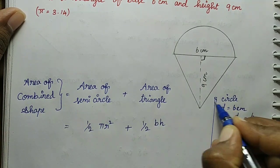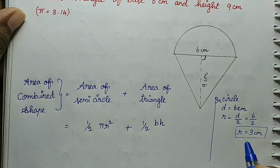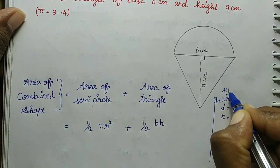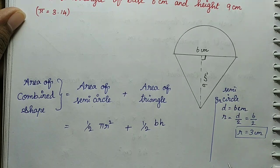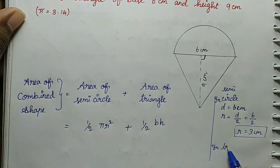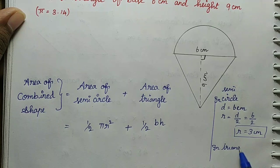We find the value for the semicircle and then for the triangle. We'll substitute the measurements into our formula.